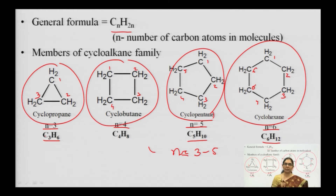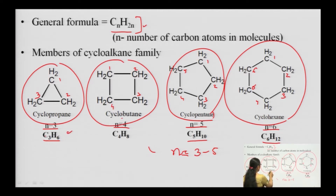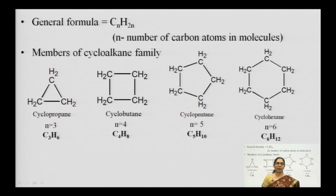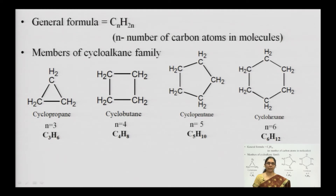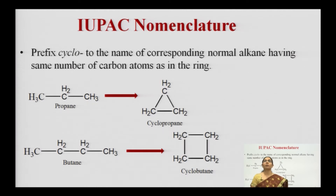Moving forward to IUPAC nomenclature — IUPAC nomenclature is universally accepted as the common nomenclature for organic compounds. You can have many trivial names depending on your region, but if you want your compound to be scientifically validated in the scientific community, you must give it a proper IUPAC name.